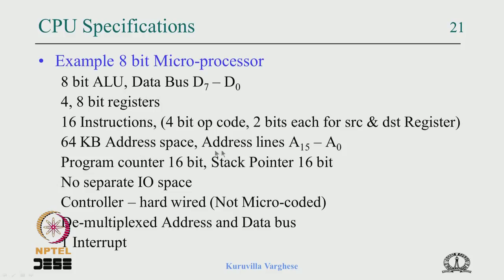It has a 64 KB address space, address lines A15 to A0. The program counter and stack pointer are 16-bit since they drive the address bus. There is no separate IO space — memory-mapped IO is used. The controller is hard-wired, meaning it is a finite state machine rather than micro-coded. It uses a demultiplexed address and data bus — so separate address bus — and there is one interrupt.